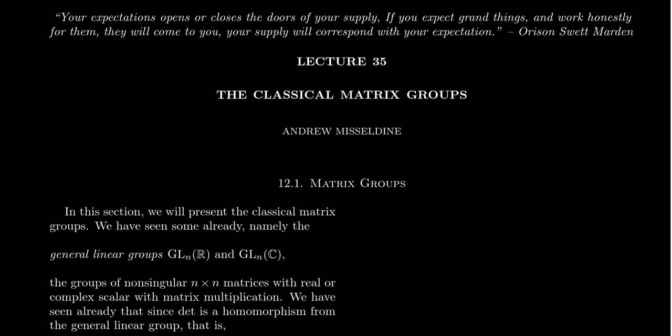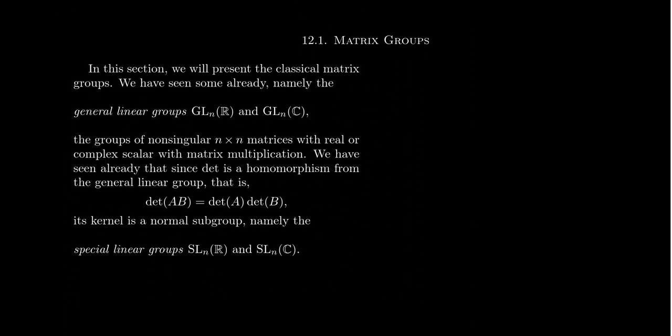So what do we mean by those? Some of these classical matrix groups we've seen already. The main one is the so-called general linear group. The two classical versions are the real general linear group and the complex general linear group. GLN of R — GL is short for general linear group. A linear group is a group of matrices because matrices act as linear transformations on vector spaces. The subscript N suggests the size of the matrix: we're looking at N by N matrices.